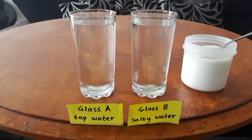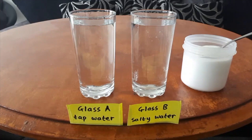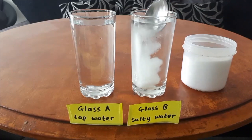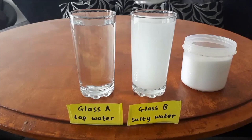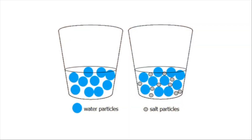Let's explore ocean currents a bit further. Here we have two glasses of water at room temperature. Glass A is just tap water and in glass B I'm going to dissolve some salt into the tap water so that it contains salty water. Salt increases the density of water — density meaning how much material is packed into a certain amount of space. The particles in salty water are more tightly packed, so glass B is more dense than the tap water in glass A.